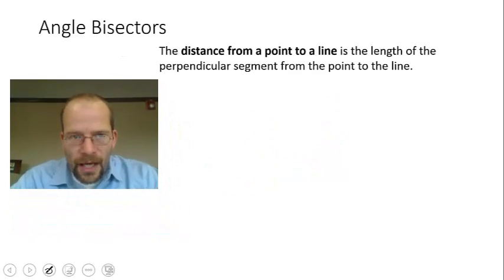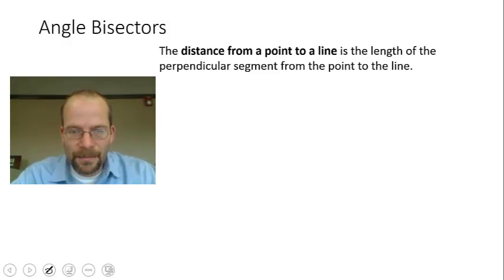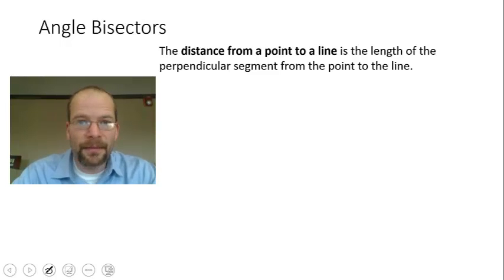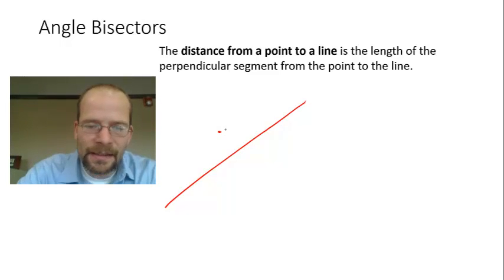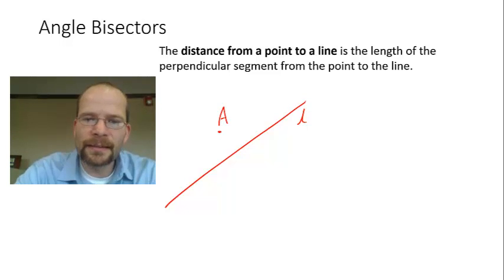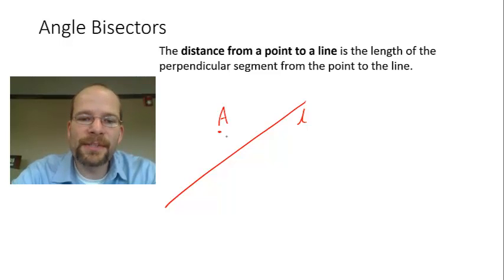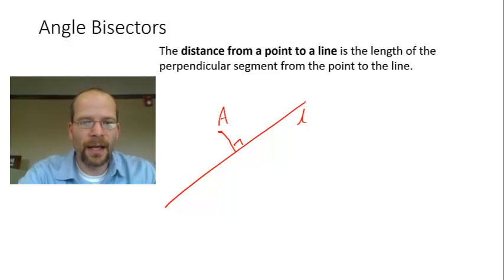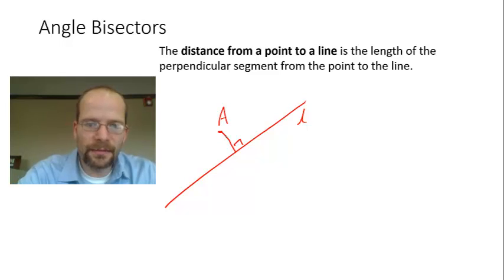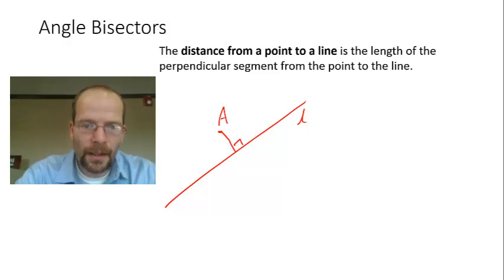When we talk about an angle bisector and the distance from a particular point to an angle, it's important to note that the distance from a point to a line is always measured on the perpendicular segment. So if I want to measure the distance from point A to line L, I would always measure it along the perpendicular segment — not over here, and not over here someplace. We always measure along the perpendicular segment.